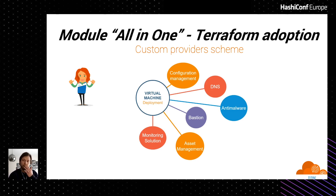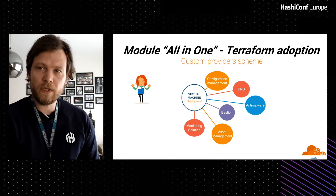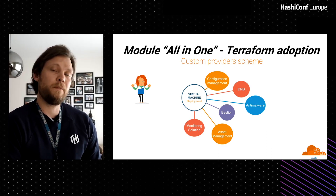Regarding our context, we can talk about our all-in-one module. The all-in-one module is our module deployment stack to integrate resources in the Decathlon ecosystem. We use a custom in-house provider to do this. For example, when a user needs to build something on GCP, the user takes the all-in-one module, declares variables to target the cloud provider, and the resource will be registered in the ecosystem — including configuration management, DNS, Bastion, anti-malware, asset management, and monitoring solutions.